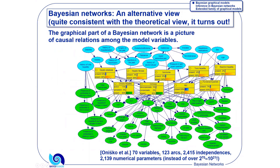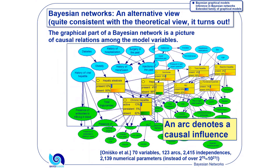With 70 variables, if you used probability trees, you would need roughly 2 to the power of 70 parameters. That's 10 to the power of 21. That's a huge number. With Bayesian networks, you just need 2,100 numerical parameters. There are 123 arcs, but it's more important how many arcs are missing. There are 2,400 arcs missing. Every time you see a missing arc, that represents an independence.